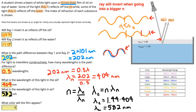We've found the wavelength of that light in the air. To figure out the color the film will appear, we compare that wavelength with the colors in the table. 582 nanometers falls between 570 and 590, so the film is going to appear yellow.